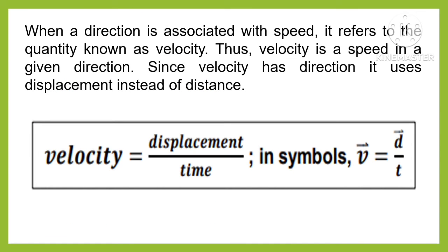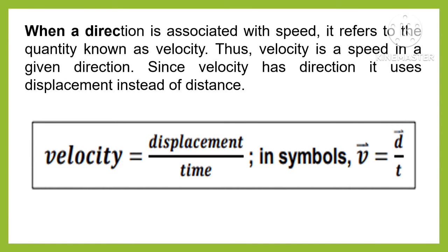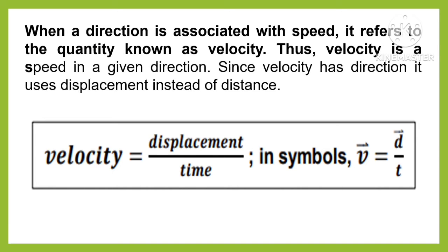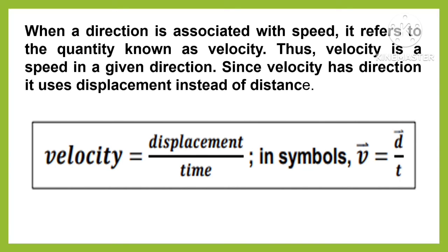When a direction is associated with speed, it refers to the quantity known as velocity. Thus, velocity is a speed in a given direction. Since velocity has direction, it uses displacement instead of distance. The formula of velocity is equal to distance divided by time, or in symbols, V is equal to D divided by T.